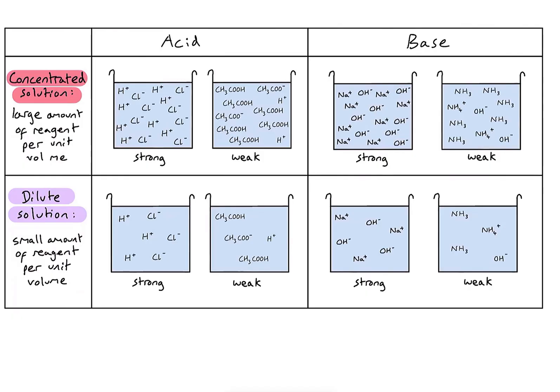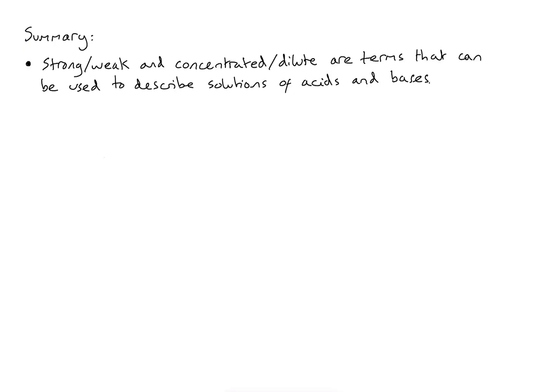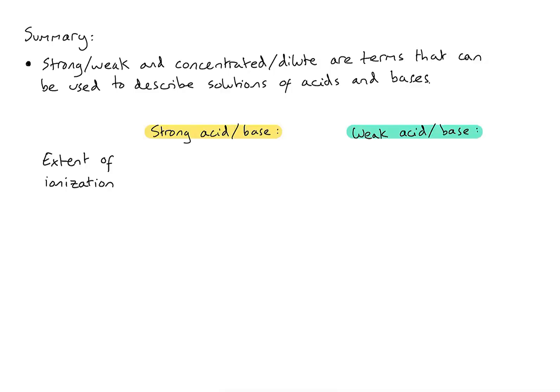Let's summarise the key points from this video. Strong, weak, concentrated, and dilute are all terms used to describe solutions of acids and bases. When talking about strong and weak, we are always talking about solutions — it's all to do with the extent of ionisation. A strong acid or base will ionise fully, and a weak acid or base will ionise only partially.